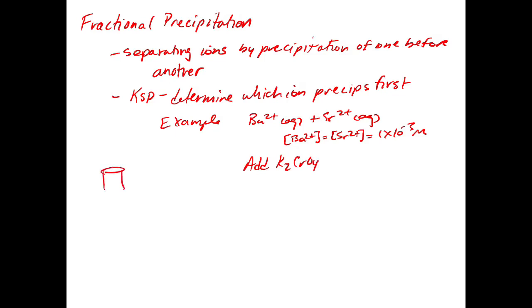So we have a beaker with some liquid containing our Ba²⁺ and Sr²⁺. We use a burette or some other measuring device, and we have a standardized solution of K₂CrO₄ that we add in. The question is: will one of these ions precipitate first, will they precipitate together, and how do we know?